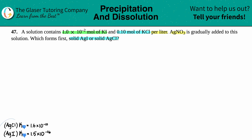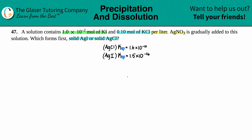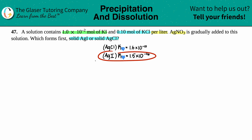This comes down to solubility products. Looking in the back of the textbook: the Ksp for AgCl is 1.6×10⁻¹⁰ and the Ksp for AgI is 1.5×10⁻¹⁶. Generally speaking, the smaller Ksp would precipitate out first, but we have different molar concentrations affecting the outcome, so we need to find the molar solubility of each compound given the common ions present.